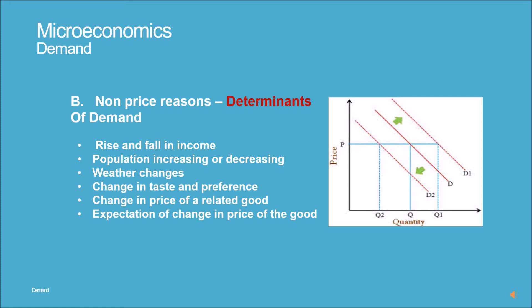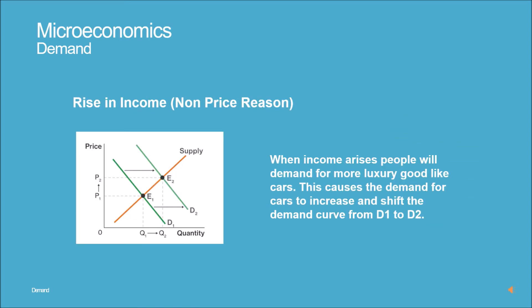Non-price determinants of demand include: rise and fall in income, population increasing or decreasing, weather changes, change in taste and preference, change in price of a related good, and expectation of change in price of a good. Rise in income — a non-price reason: when income rises, people will demand more luxury goods like cars. This causes demand for cars to increase and shifts the demand curve from D1 to D2.